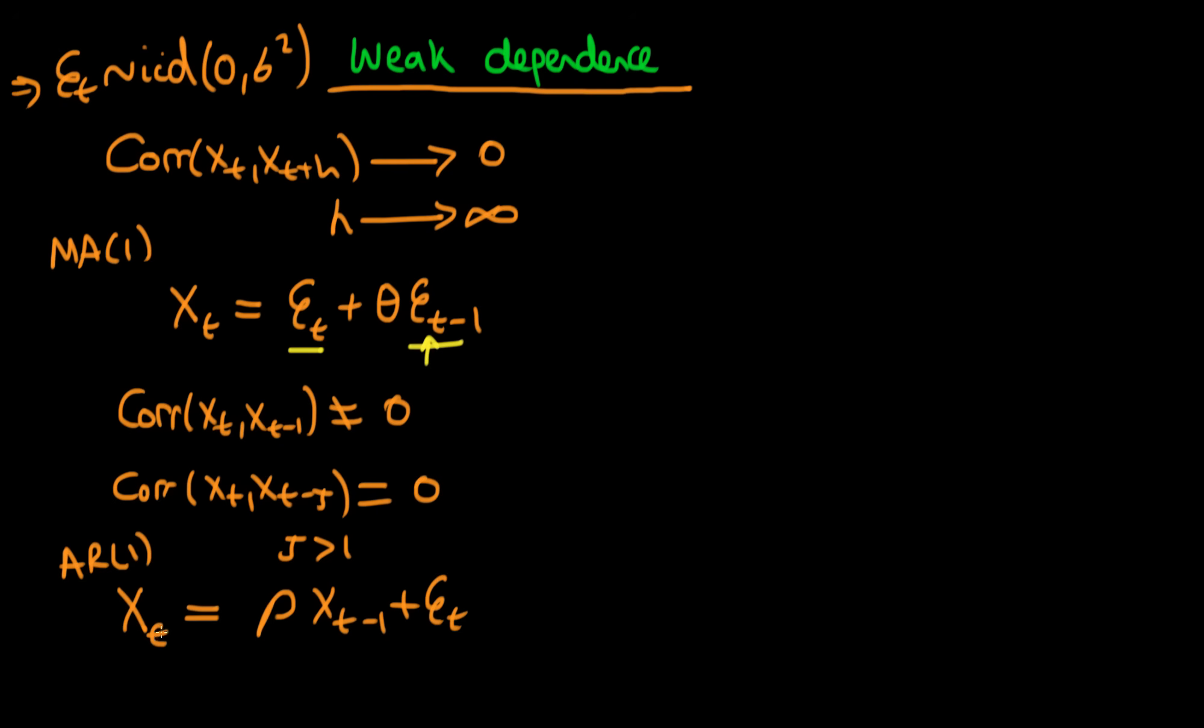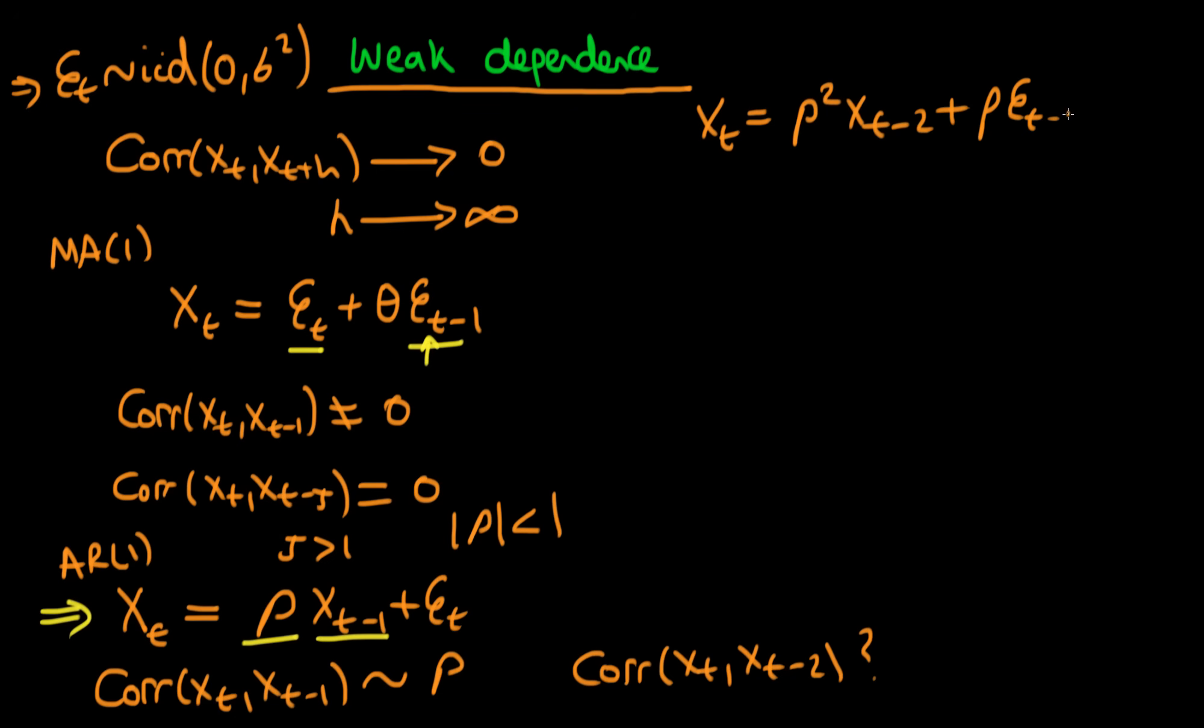If the modulus of ρ is less than 1, then the process is weakly dependent. The correlation between X_t and X_{t-1} will have ρ in it. What about the correlation between X_t and X_{t-2}? To see this, we need to back substitute for X_{t-1}, because X_{t-1} must also satisfy this relationship. Doing that, we get X_t equals ρ² times X_{t-2} plus ρ times ε_{t-1} plus ε_t.